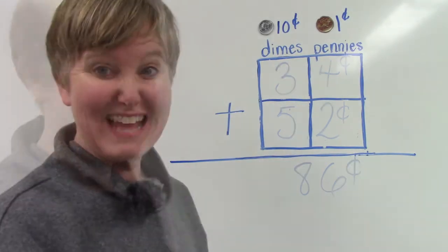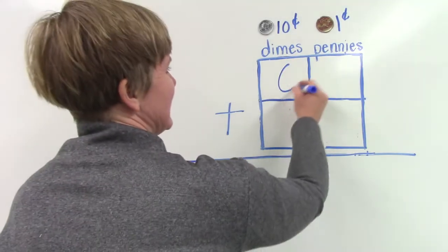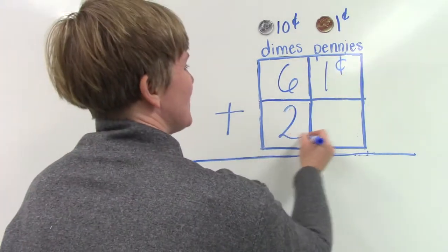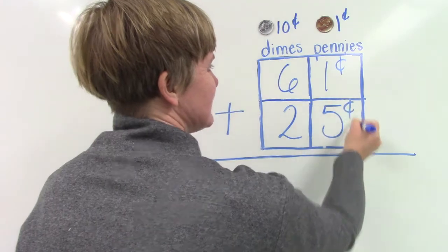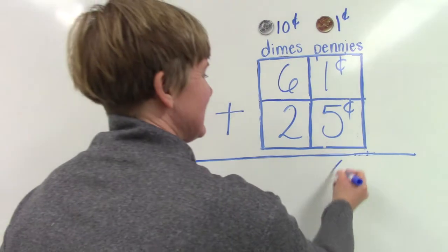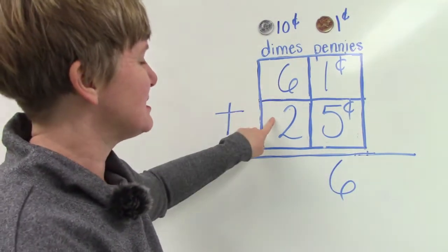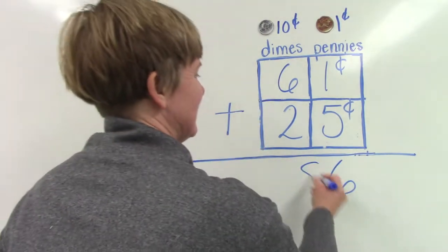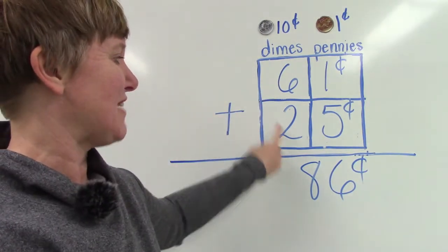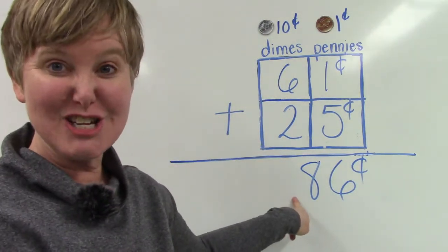Let's try another one. This time we are going to add sixty-one cents plus twenty-five cents. We're going to add our pennies together. Five plus one is six. And then our dimes. Six plus two is eight. Sixty-one cents plus twenty-five cents is eighty-six cents.